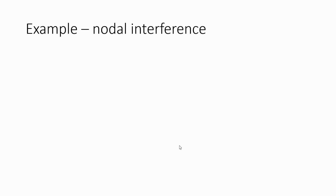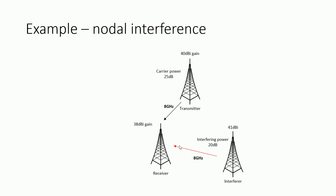We take an example which talks about nodal interference — interference that occurs at the node. We have three stations. The transmitter antenna gain is in dBi, and we are transmitting power at 25 dBm. The interfering station is simulated with an interfering power of 20 dBm at a gain of 41 dBi.